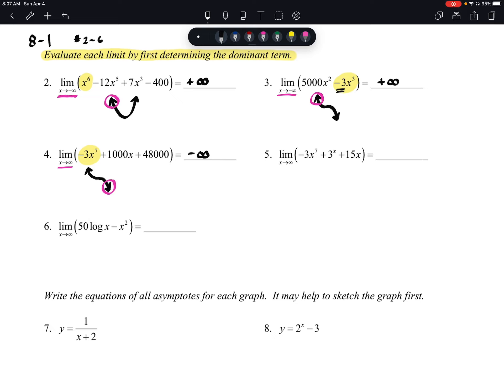Number five says the limit as x approaches positive infinity: negative 3x to the 7th plus 3 to the power of x plus 15.